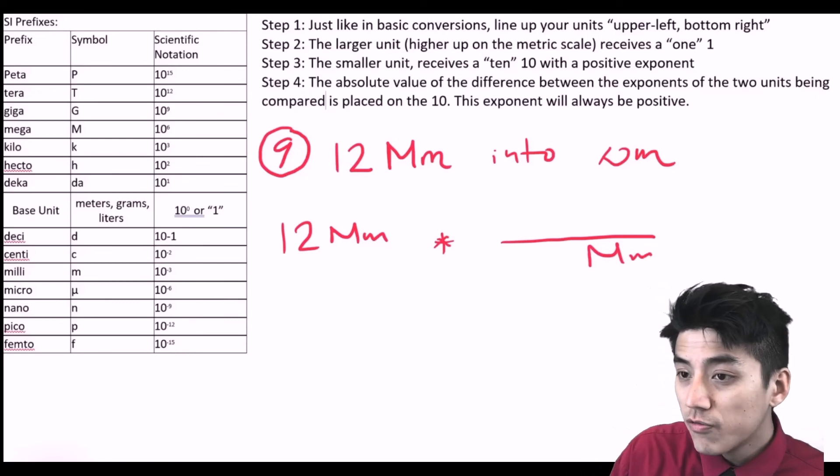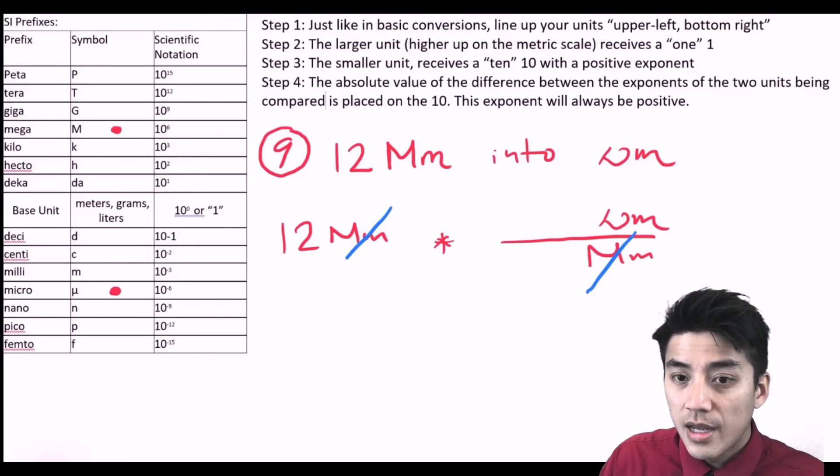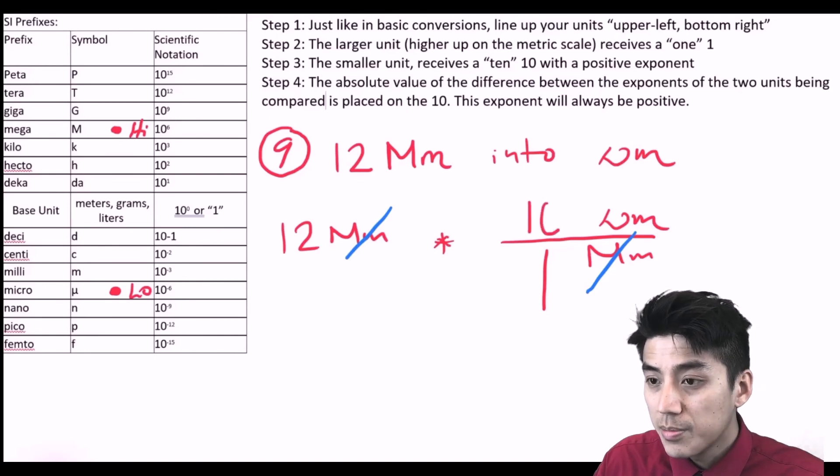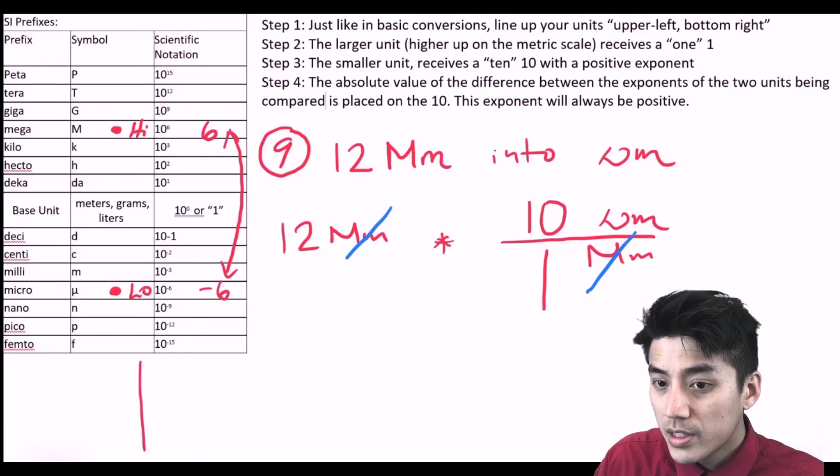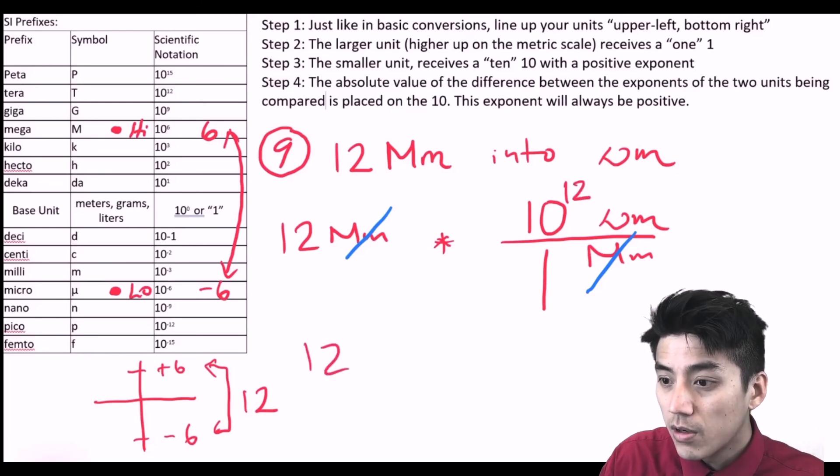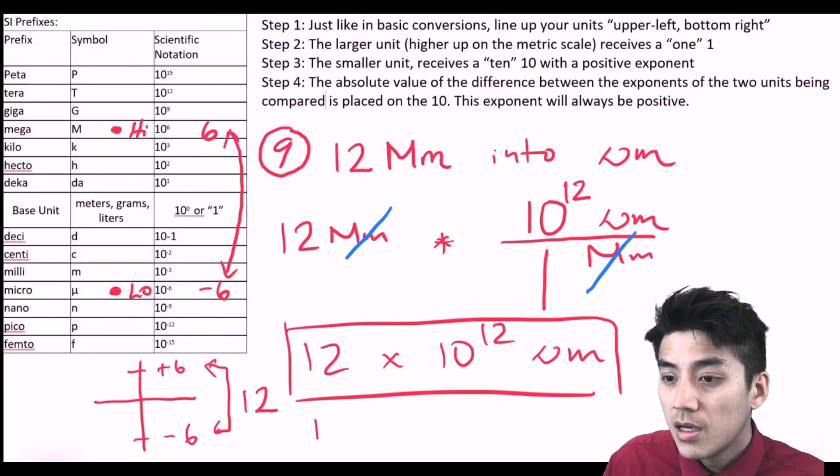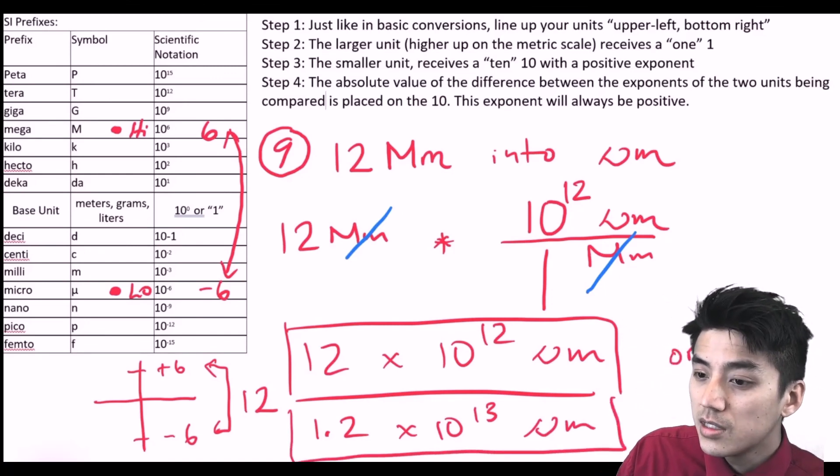Problem number nine. Change 12 megameters into micrometers. Just like before, line up your units. Make sure mega cancels out. We're going from mega down to micro. Mega is higher up, micro is lower. Mega gets the one because he's higher up, micro gets the ten because he's lower. Let's compare their exponents. We have a plus six and a negative six. What's our absolute distance between them? We have plus six, minus six. How many floors separate these two? It turns out to be 12. So I'm going to write 12 for the exponent. Rewrite our answer. 12 times 10 to the 12th micrometers. You can actually leave it like that. Or in proper scientific notation where the decimal is to the immediate right of the leading integer, 1.2 times 10 to the 13th micrometers.